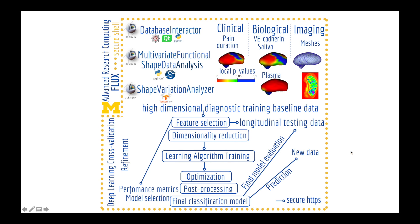The funding of the American Association of Orthodontics Foundation will allow us to collect longitudinal data to test a deep learning neural network that performs classification based on features that are not only imaging features but clinical and biological features as well, and to train such a deep learning neural network towards a final model of prediction of how severe the disease is.